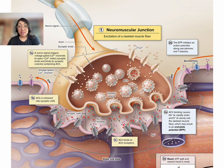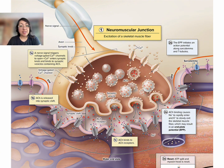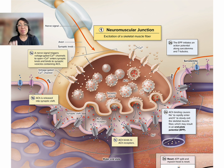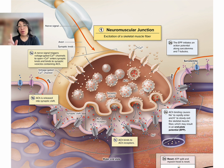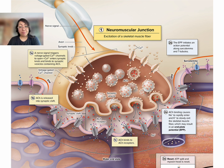When acetylcholine is in this cleft, it is going to attach to these channels right down here. These channels are connected to the muscle cell — that's the muscular part of the neuromuscular junction. Acetylcholine makes a connection to these channels and opens them up. Specifically, it allows sodium to go into the muscle cell. When sodium goes in, it is going to depolarize the muscle cell membrane. All these positively charged ions going across the cell membrane make that negative number more positive, and that happening all along here will eventually cause a reaction down the line.